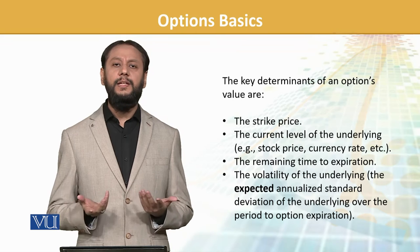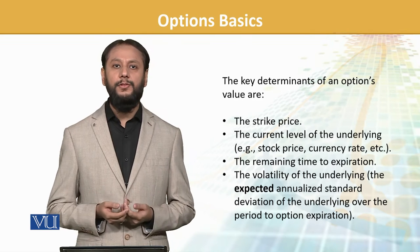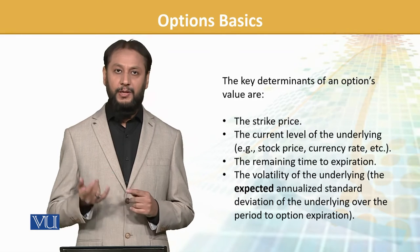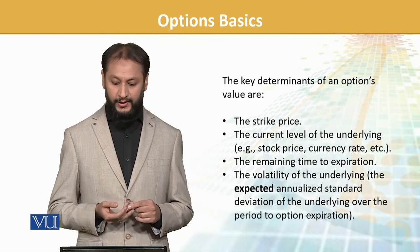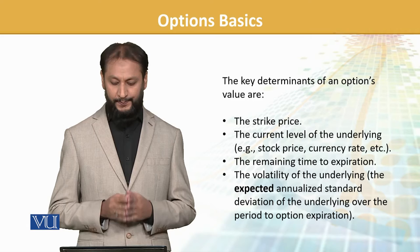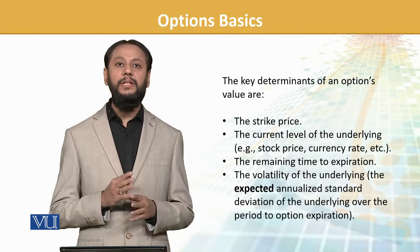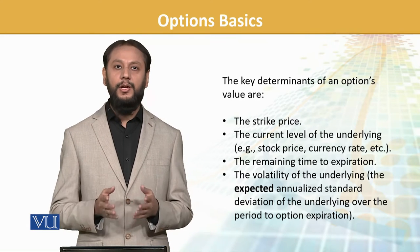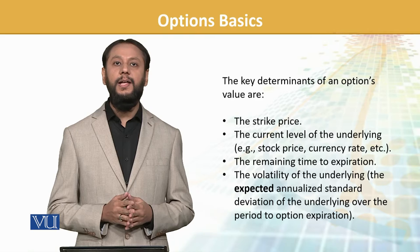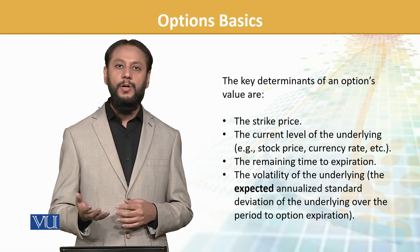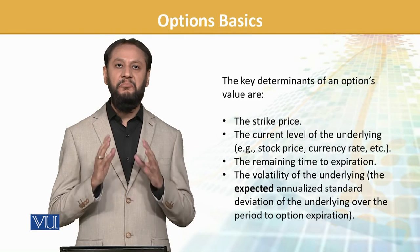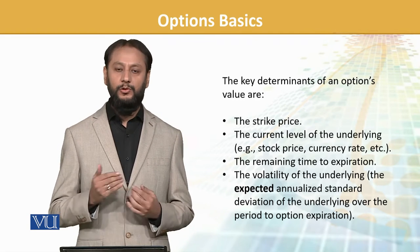An option's value — for example a call option on a stock — depends on certain determinants. Strike price is a very critical one. Then the current level of the underlying: what is the current price of the asset on which the option is written? Time to expiration: what is the period — three months, thirty days, or even longer or shorter? Volatility of the underlying: if the underlying is more volatile, the option value will be different compared to a stable underlying.